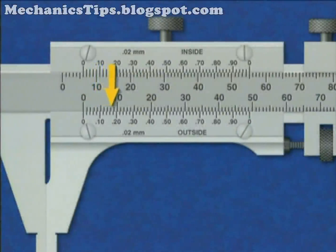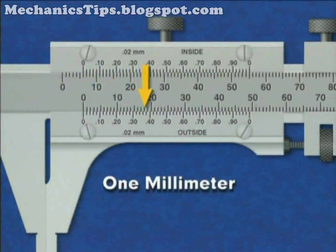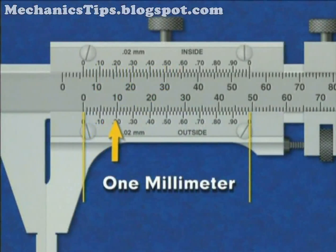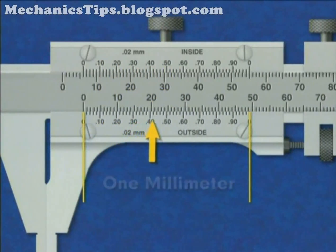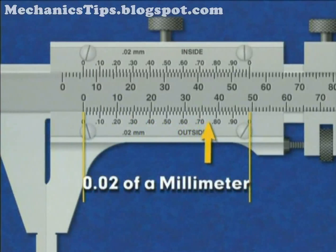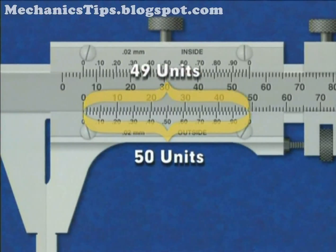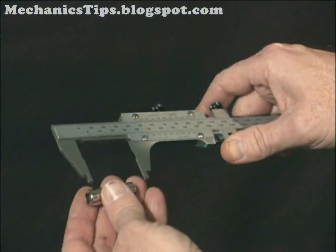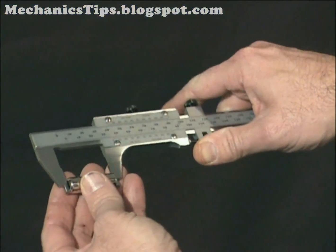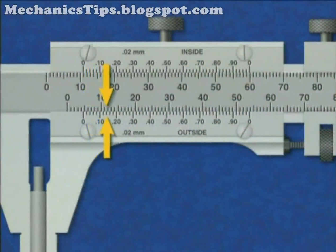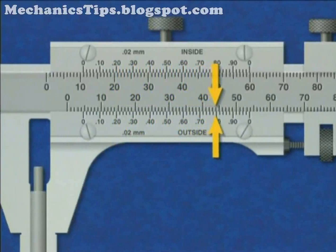Each graduation on the stationary bar represents one millimeter. The Vernier plate essentially divides one millimeter into fifty units, with each graduation representing two one-hundredths of a millimeter. These fifty units represent exactly the same distance as forty-nine units on the stationary bar. Because of this minute difference, when a measurement is taken, only one graduation on the plate will exactly coincide with a graduation on the stationary bar.